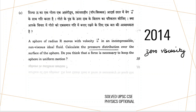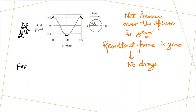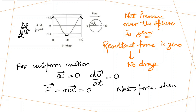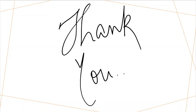For the second part: is a force necessary to keep the sphere in uniform motion? For uniform motion, acceleration should be zero, meaning velocity is not changing with time. We know force equals mass times acceleration, so if acceleration is zero, the net force must be zero. Therefore, no external force is required to keep the sphere in uniform motion. This is the solution to the question. If you have any doubts, write in the comment box, and please like, share, and subscribe to my channel.